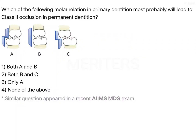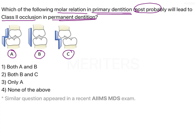The question asks which of the following molar relations in the primary dentition is most probably going to lead to a Class 2 occlusion in the permanent dentition. We have been given three images: A, B, and C. These are the three types of molar relations most likely seen in the primary dentition, and we need to identify which will lead to a Class 2 occlusion in the permanent dentition.